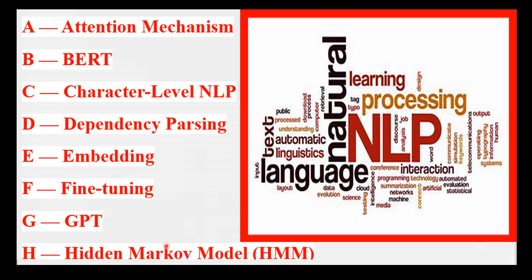H is for Hidden Markov Model — a statistical model used in NLP for tasks like speech recognition, text chunking, and part-of-speech tagging. Imagine a word association game where each word is a hidden state and the model predicts the next word based on the previous state. For example, in POS tagging, the hidden states are parts of speech such as noun or verb, and the observable outputs are the words themselves — the model predicts the most likely sequence of parts of speech for a given sentence.